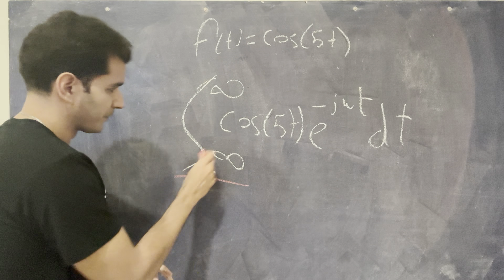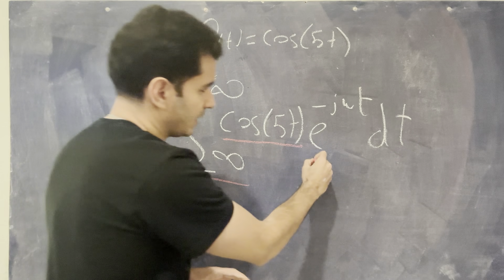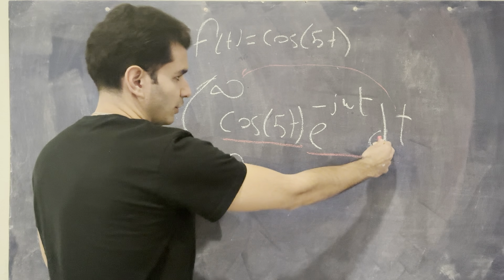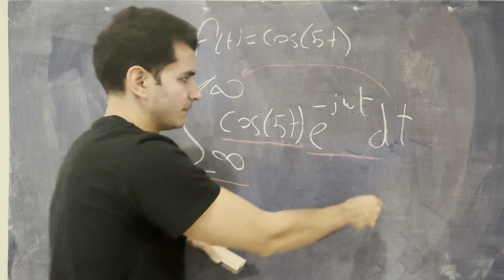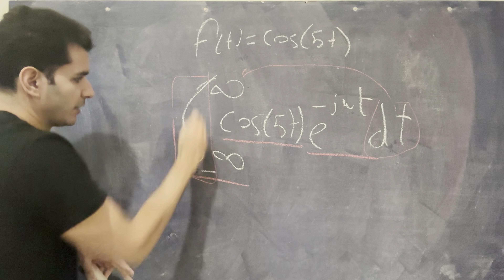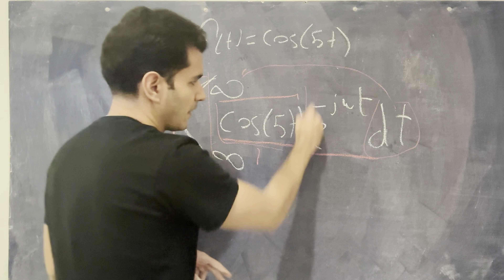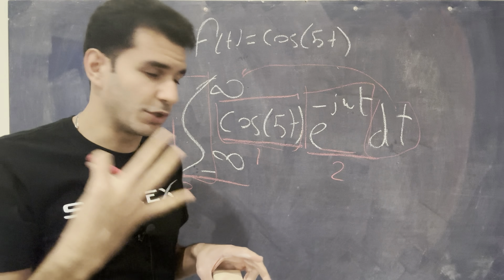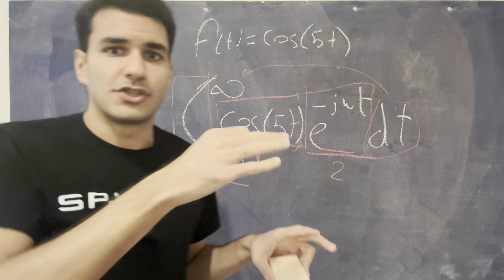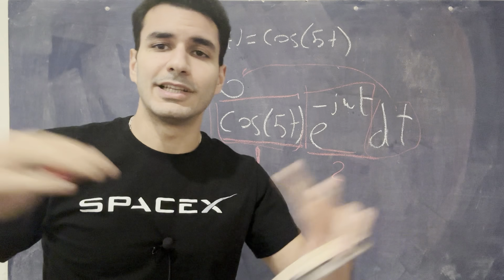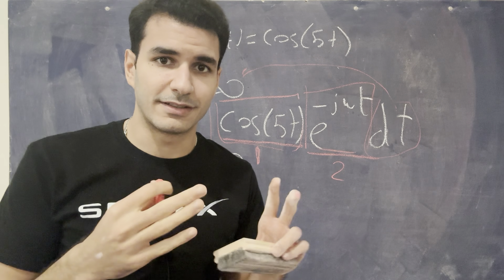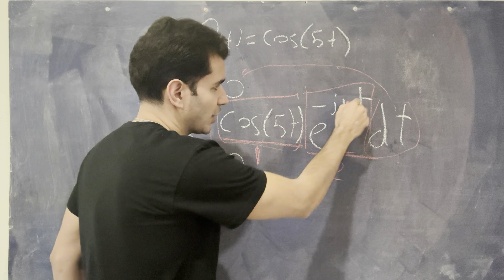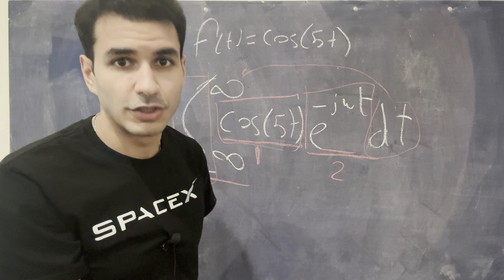Let's break it down in first principles. Before explaining the math, I want you to conceptually understand what the Fourier transform is doing. Every Fourier transform has three components: component one is f(t), the cosine — the actual signal; component two is e to the minus j omega t — the correlator or detector; and component three is the integral with dt, representing integration with respect to time. Think of component one as the actual signal traveling in space — voice, light, audio — anything in the time domain that we want to bring to the frequency domain.